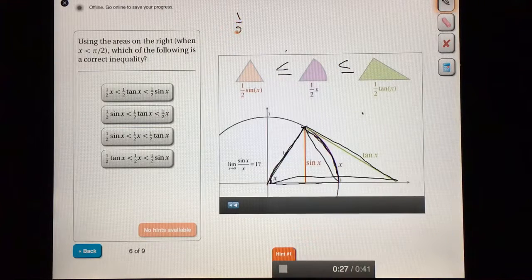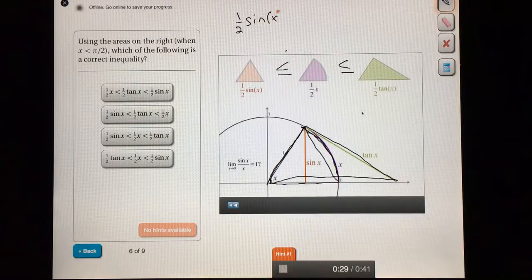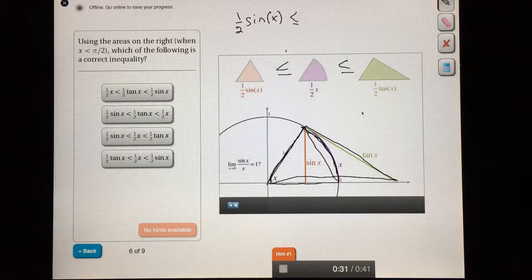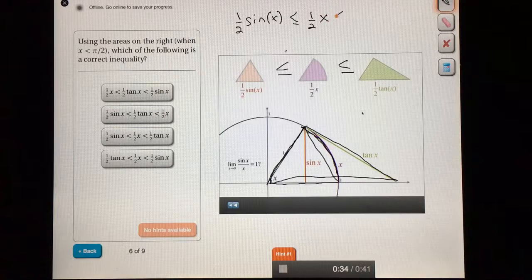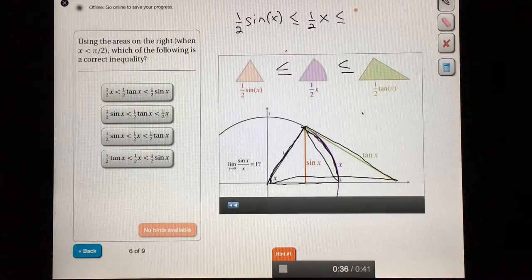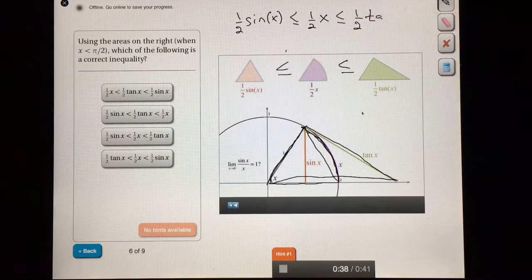So the order of areas is one-half sin x, that's the orange one. That's less than or equal to one-half x, that's the purple one. And that is less than or equal to one-half tangent of x, which is the green area.